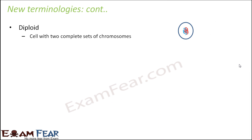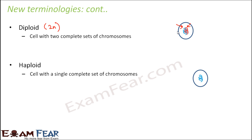Diploid means a cell that has two complete sets of chromosomes, normally represented as 2n. All the cells of our body are diploid because they have two sets of chromosomes — one set from the father and the other from the mother. Haploid is a cell with a single set of chromosomes. All somatic cells are diploid; examples of haploid cells are the male and female gametes — the sperm cell and the egg cell.